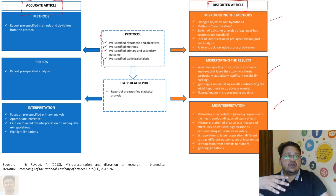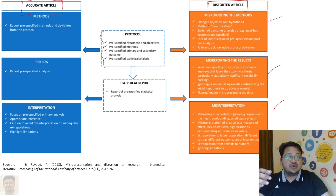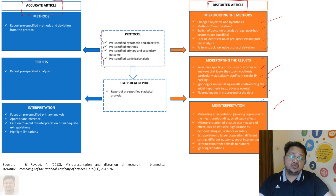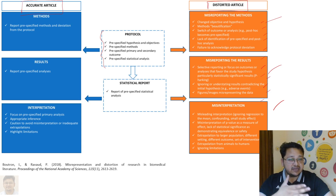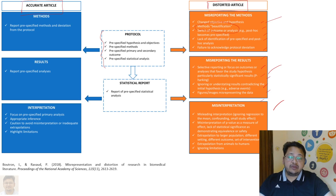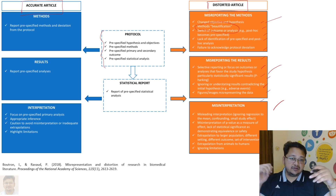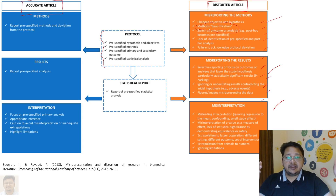In contrast, a distorted article may have misreporting of methods, misreporting of results, and misinterpretation. A distorted article can result from negligence in some cases, or it can be done knowingly to achieve a desirable finding or to beautify the results. Ultimately, when a reader goes through such work, they can easily find out if it is not reproducible. We have already discussed duplicate or redundant publication — if someone has done that and a reader has reported it, following code guidelines also matters.